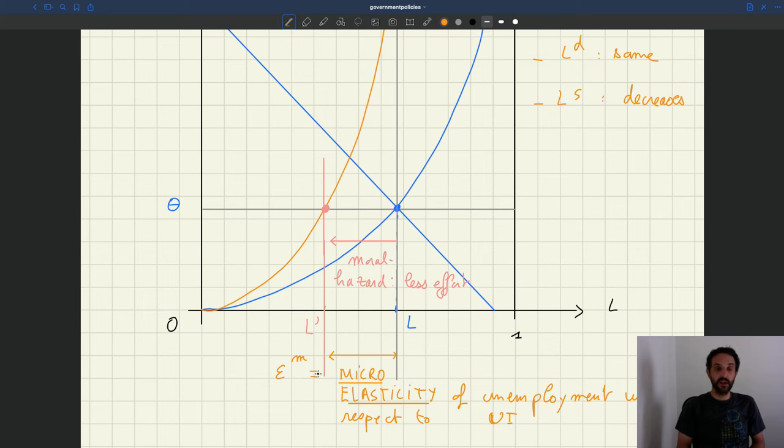Of course, if you change the labor supply in your equilibrium, given at the intersection of supply and demand, if you change supply, in most cases you're going to have a new tightness in equilibrium. And it turns out that that response of tightness is actually going to dampen the initial effect of UI. So actually, the kind of macro-effect of UI is not as bad as what you would think at the micro-level.